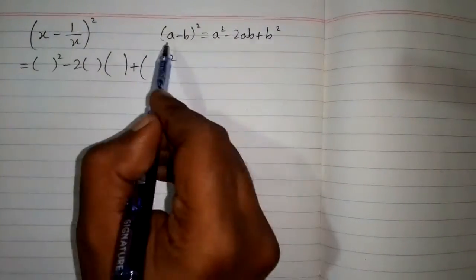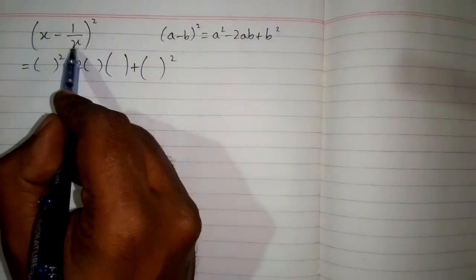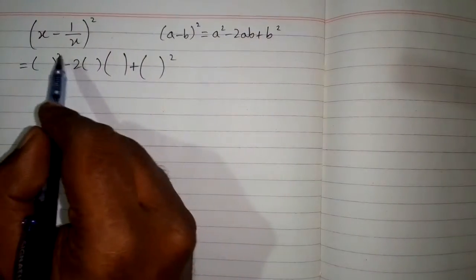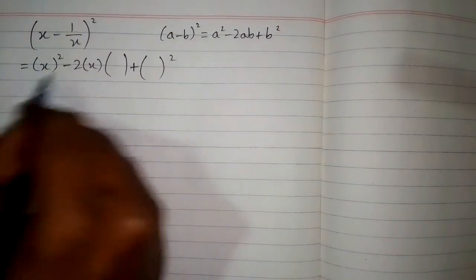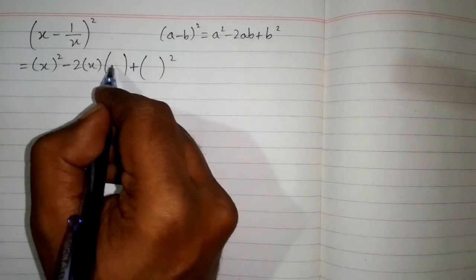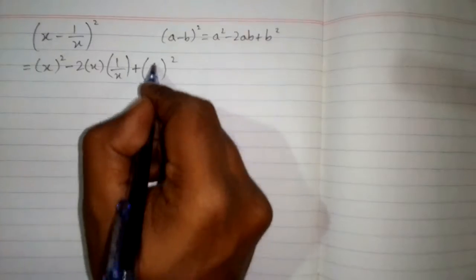Now we can see that we have x in place of a and 1 upon x in place of b. So we will put these values in the respective places of a and b. So here we will write x and here in the position of b we will write 1 upon x.